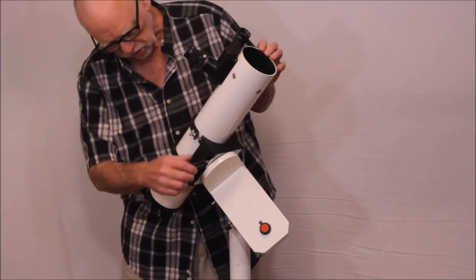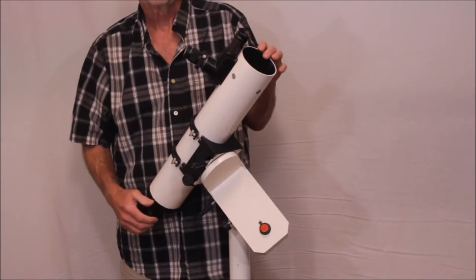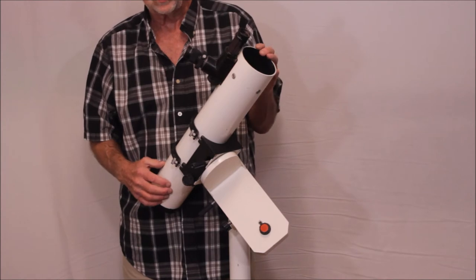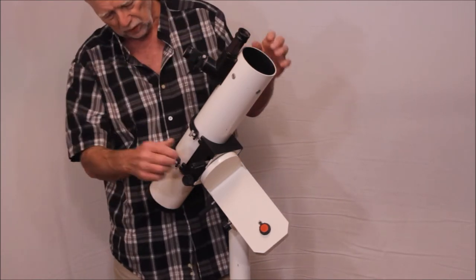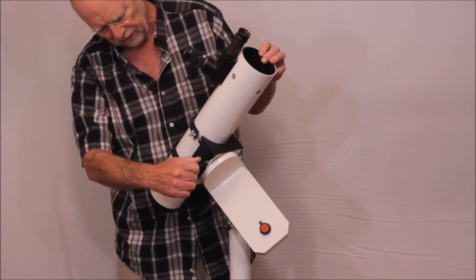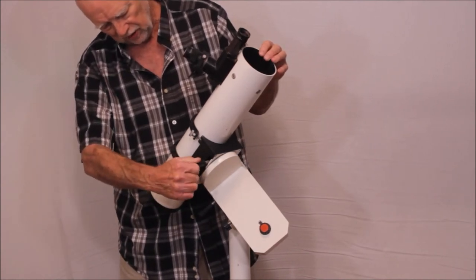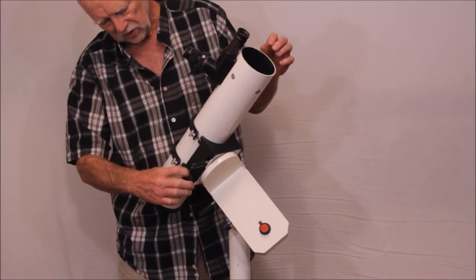So let me show you a little bit about the operation of this extremely unusual mount. Despite the fact that it looks just as weird as it could possibly be, it's actually a fairly straightforward German equatorial mount here. This is a lock and that's a slow motion. So you have a lock here and you have slow motion.